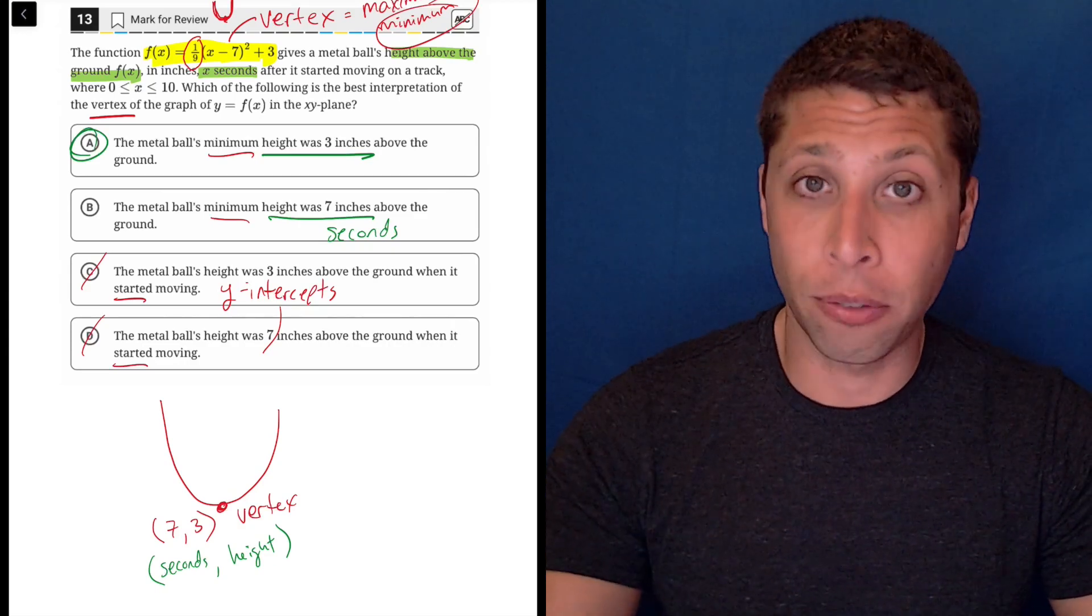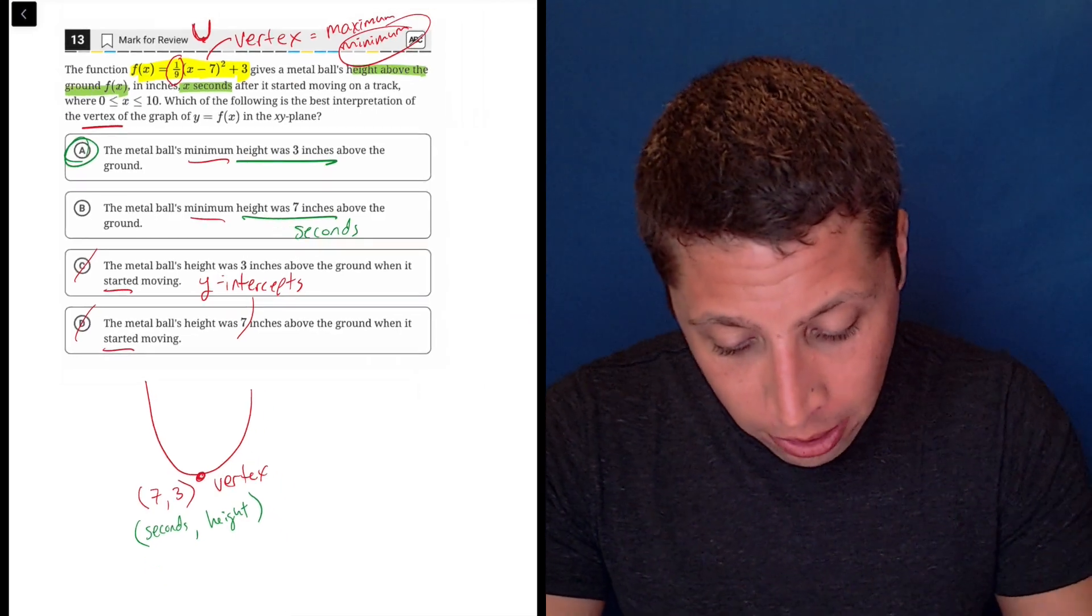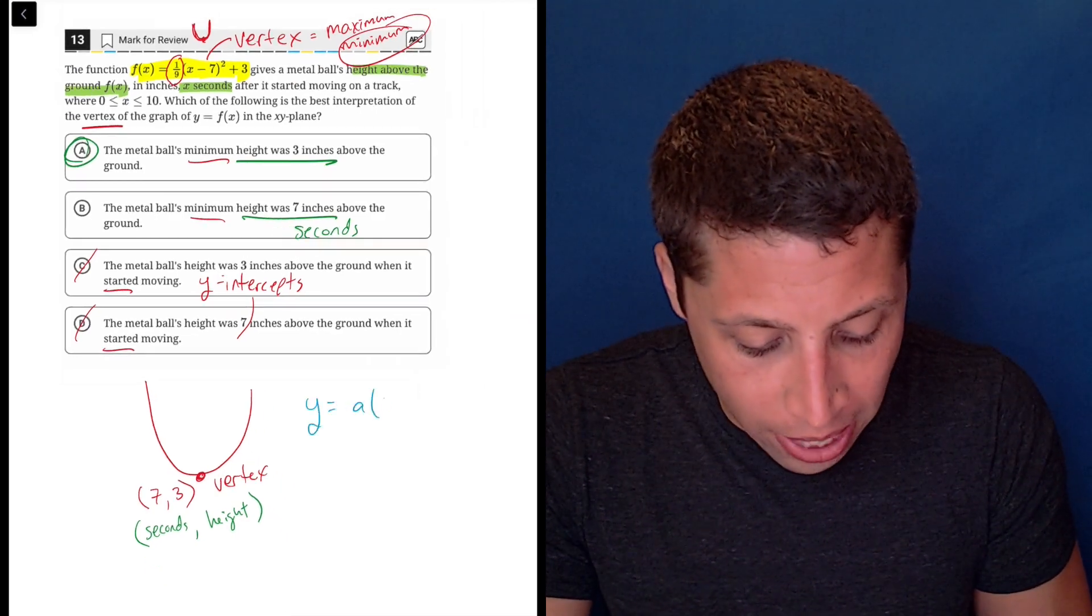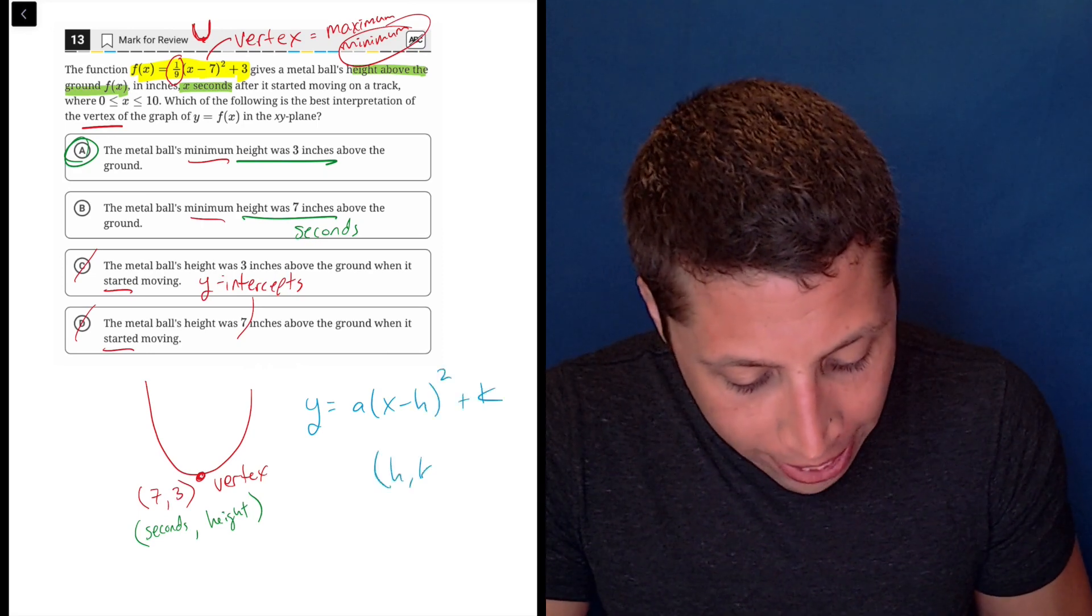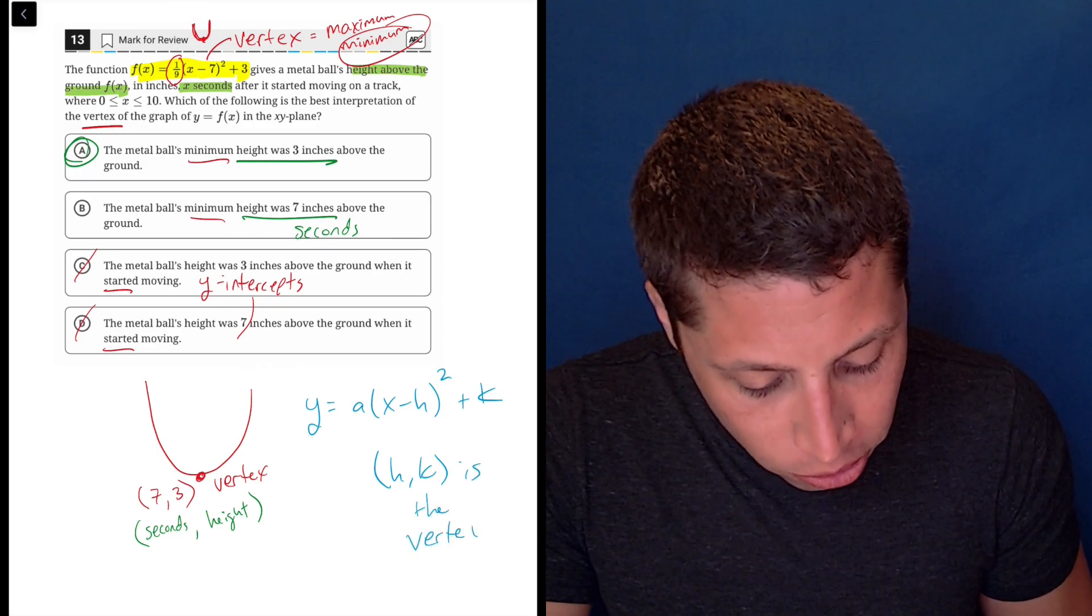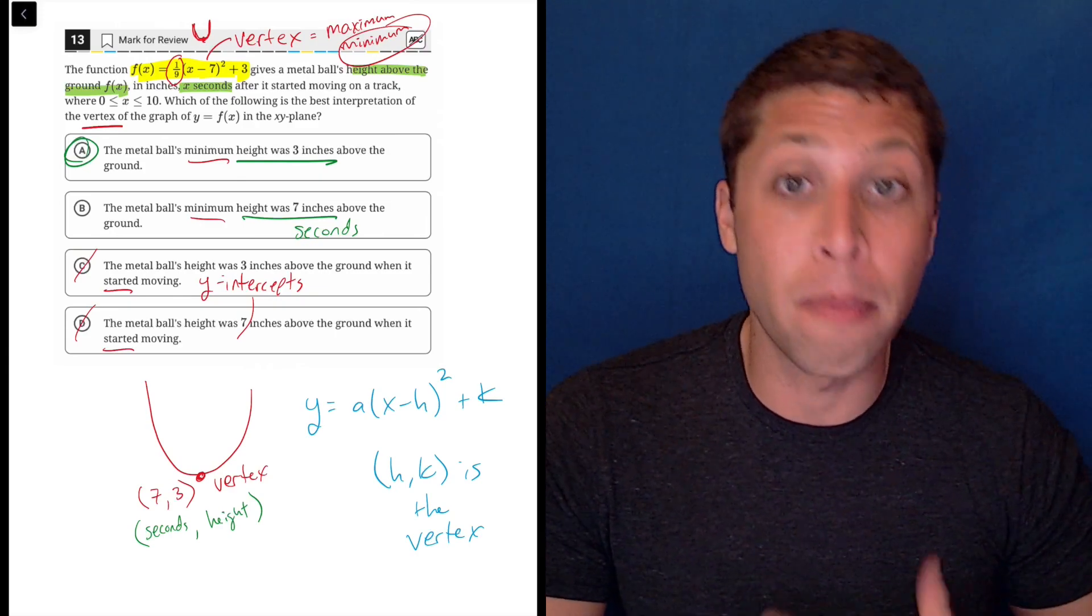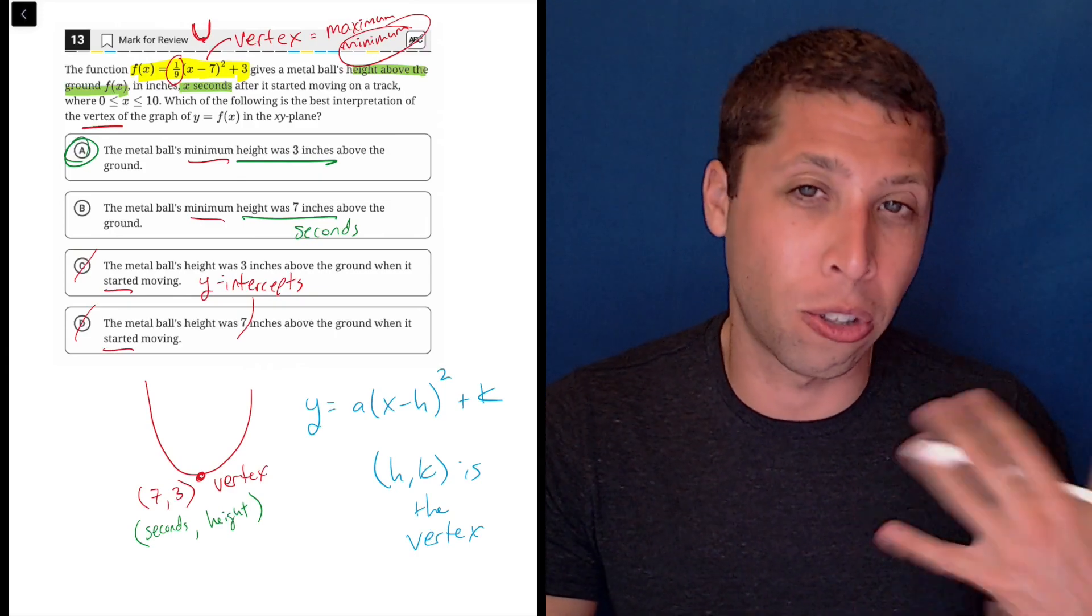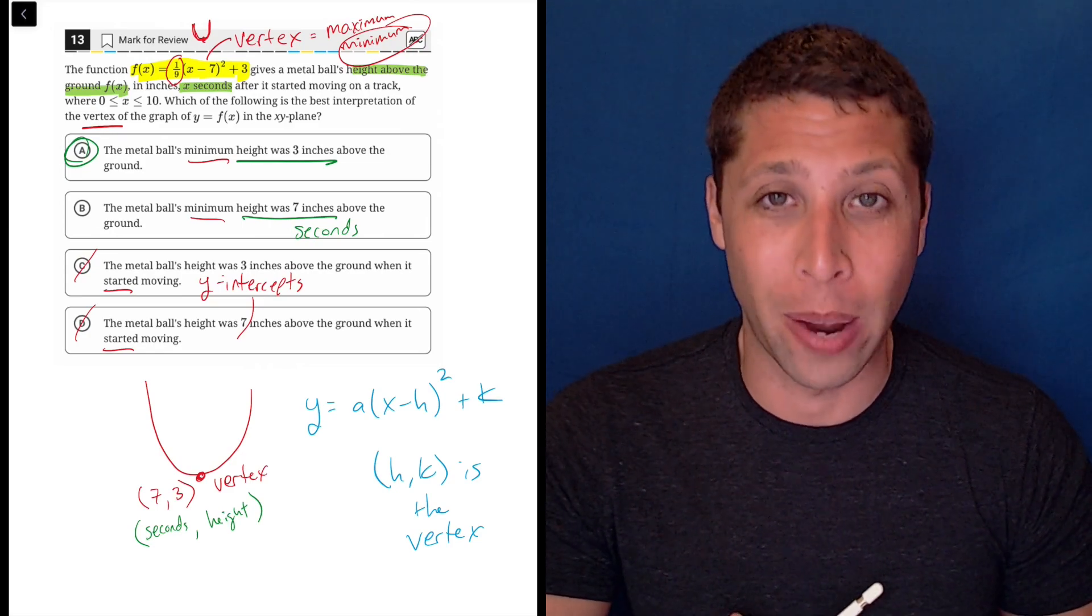But I will say the thing to memorize is, first of all, what the vertex form of a parabola looks like. The generic version of it is y equals a(x minus h) squared plus k, where (h,k) is the vertex. And we also need to memorize that the vertex is known as the maximum, the minimum, the turning point. All these words are associated and so we shouldn't be surprised if we see them pop up in the stories whenever they have a vertex equation.